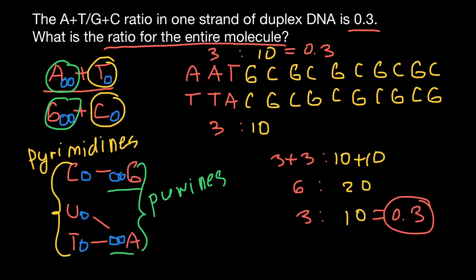It is important to know how to use these ratios because each species has its own unique ratio of bases. This number can vary between different species, but within a species it does not vary from one individual to another. This is also a good representation of Chargaff's rule, according to which the number of purines equals the number of pyrimidines, the number of cytosines equals the number of guanines, and the number of thymines equals the number of adenines. That's all for today — thank you for your attention, please subscribe for new videos, and see you next time. Goodbye.